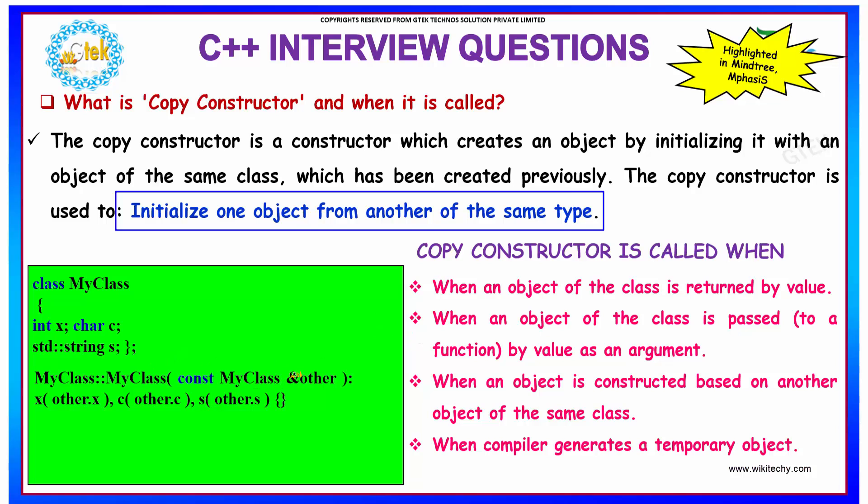If you see copy constructor, say here we are passing the value of other, and if it is an object of MyClass, then it will have its own set of x, c, and s. So other is a type of MyClass, hence it will have its own pair of x, c, and s. So we are assigning the value of x, c, and s of other to a new value of x, c, and s. This is done using your copy constructor.